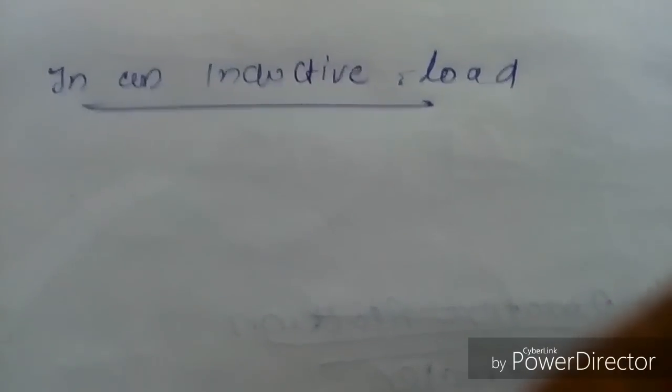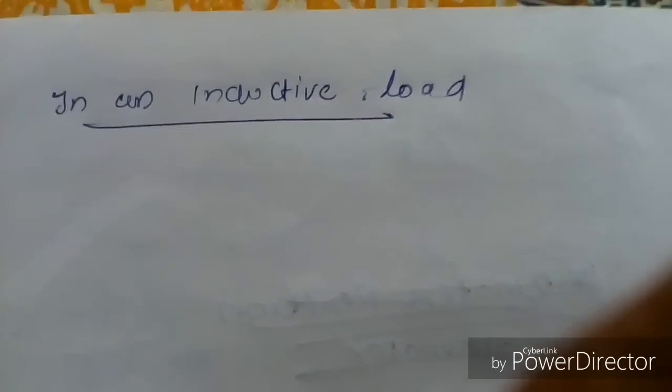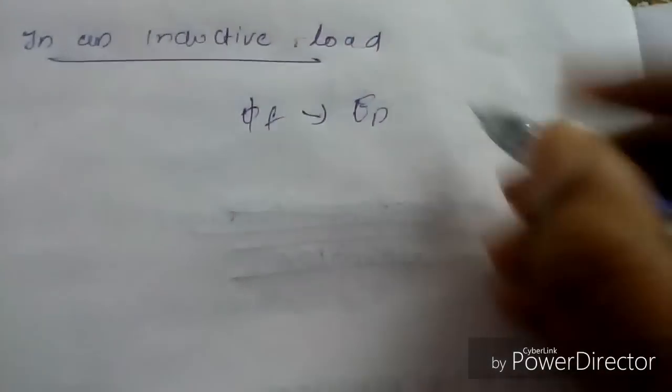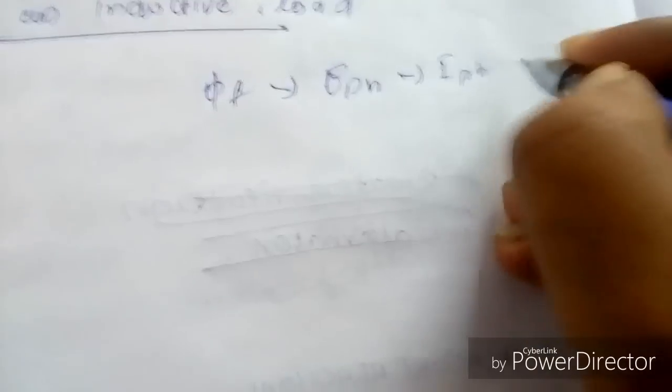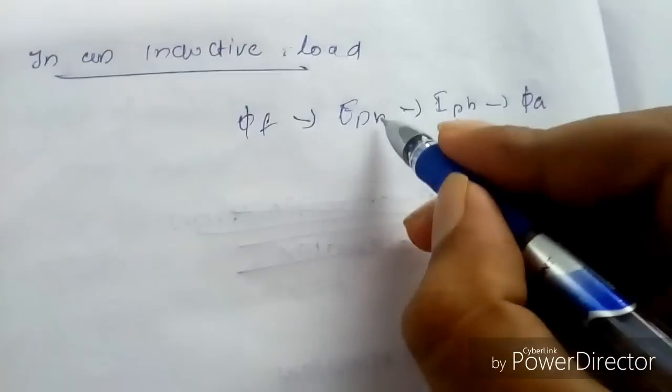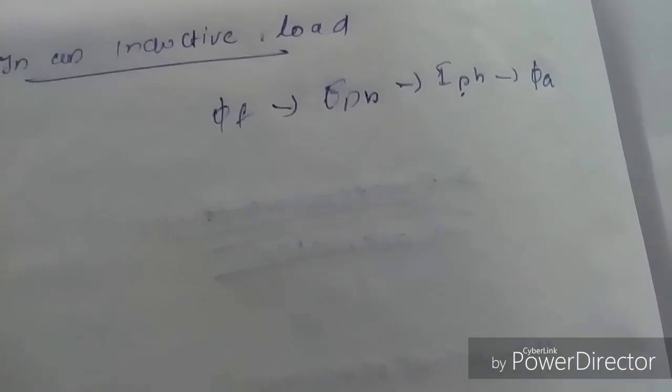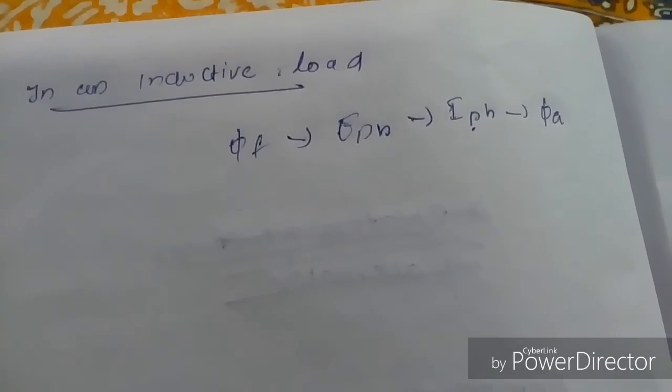Considering an inductive load — the inductive load is a lagging power factor load. The field flux induces an EMF, E phase, in the armature, and it gives rise to a current I phase in the armature. On an inductive load, this I phase will be 90 degrees lagging to the E phase — in an inductive load, I phase lags E phase by 90 degrees.